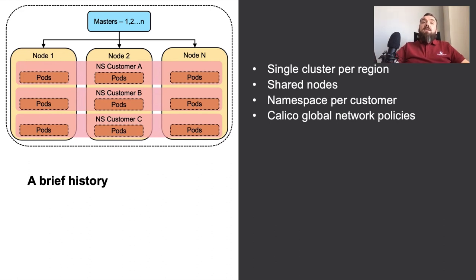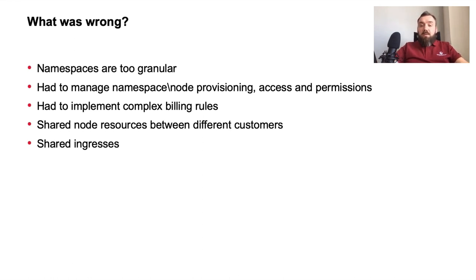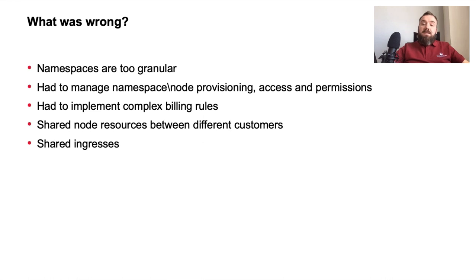At the beginning, when we hadn't got a lot of customers, this setup was quite good for us. But things changed when clusters started to grow and we got more customers on board. The first problem was that namespaces are too granular — most of our customers needed more than a single namespace, they needed a namespace per project or per application. So we had to manage namespace provisioning, access, and permissions for them. Another problem was billing: with shared nodes, you need to implement complex billing rules. And due to shared resources, it was very easy to get the noisy neighbor effect when customer workloads began to interfere with each other.